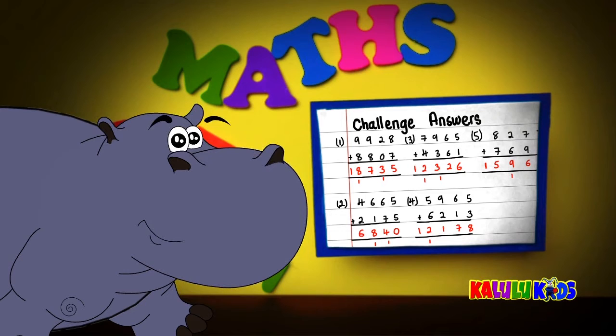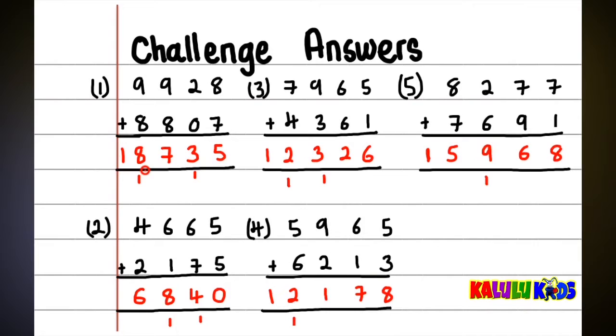Now, let's look at the answers to the challenge. Number 1, the answer should be 18,735. Number 2, the answer should be 6,840. Number 3, the answer should be 12,326.